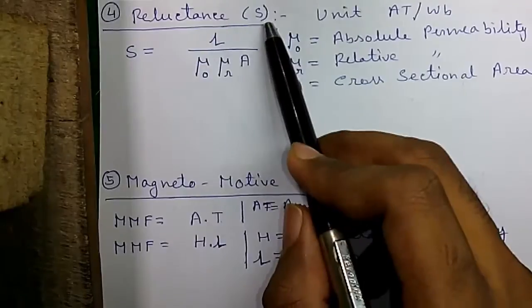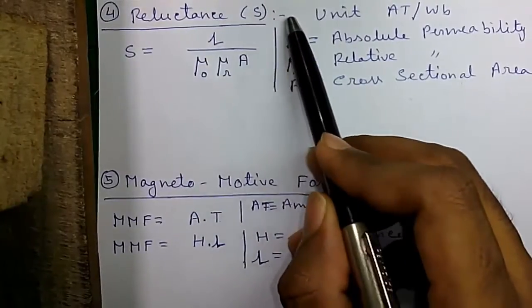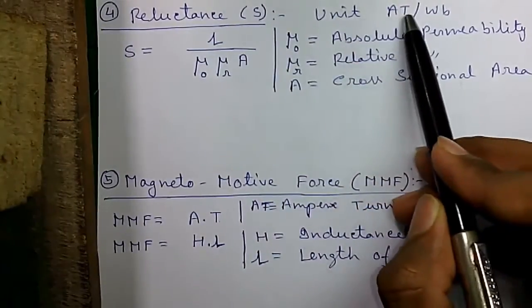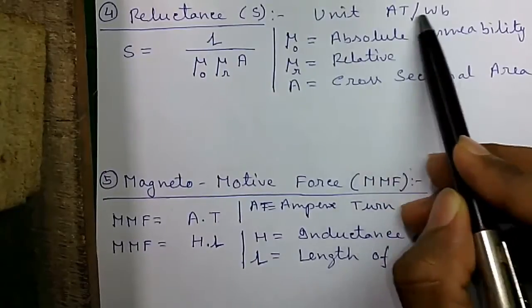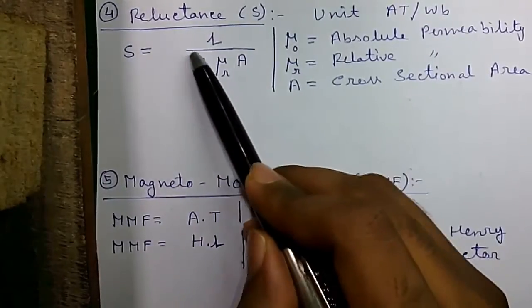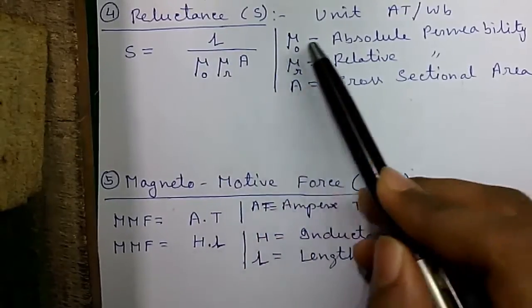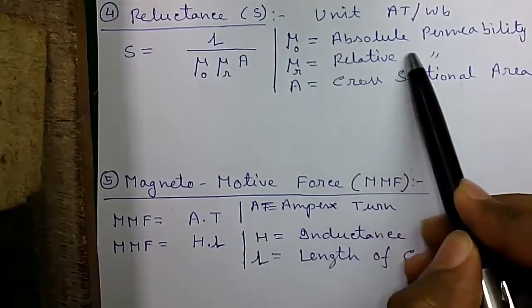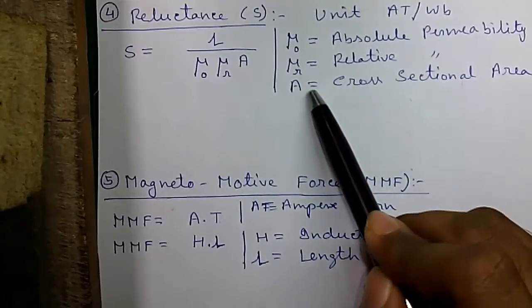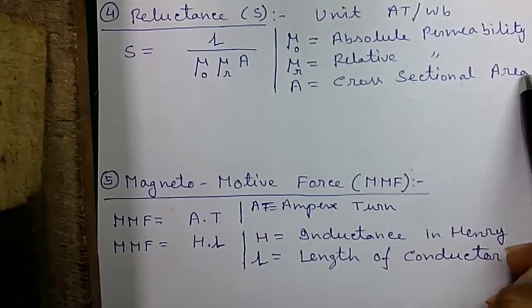Formula four, reluctance, represented by S, unit is AT by WB or ampere turn per Weber. So S equals to L divided by mu zero into mu R into A, where mu zero is absolute permeability, mu R is relative permeability and A is the cross sectional area of the conductor.